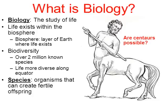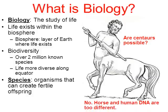Are centaurs possible? If you know your Greek mythology, it's an organism that's half human and half horse. Can a human and a horse breed and reproduce with one another? The answer is no. Humans and horses are different species — our DNA and horse DNA is too different.